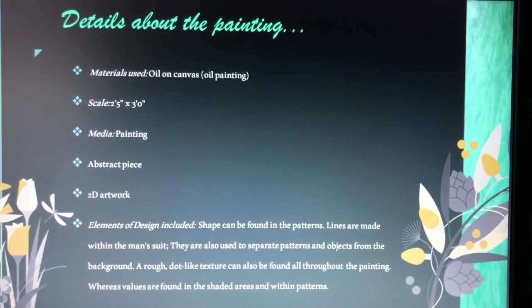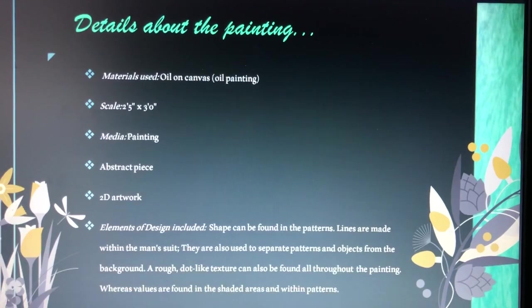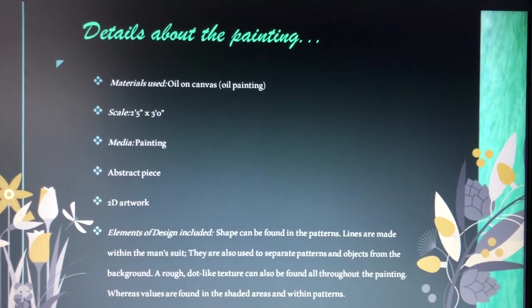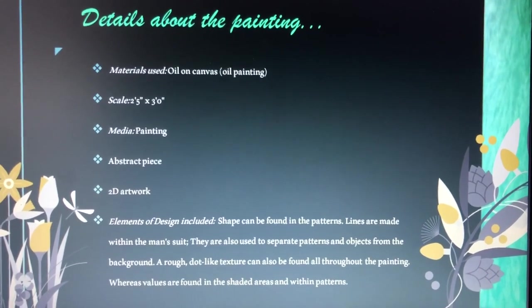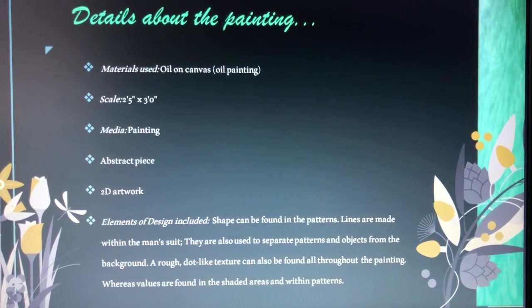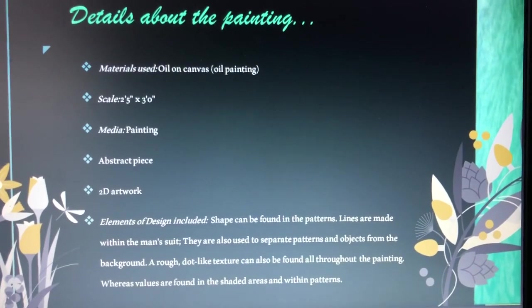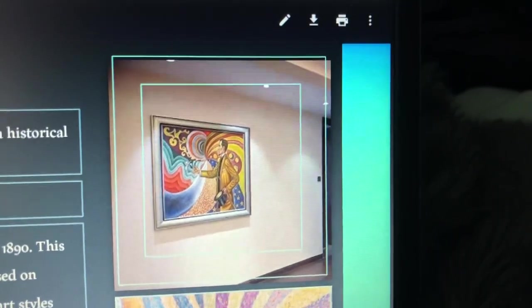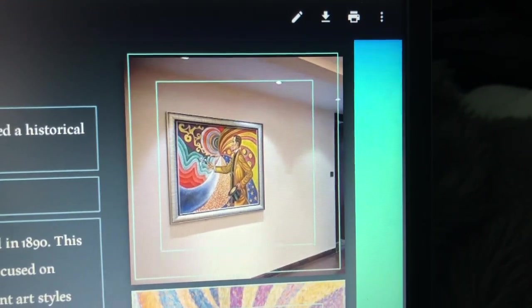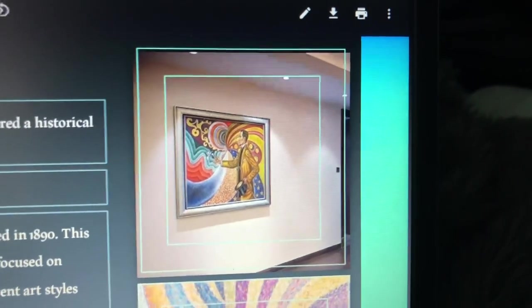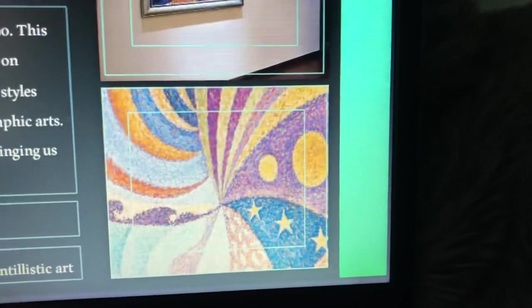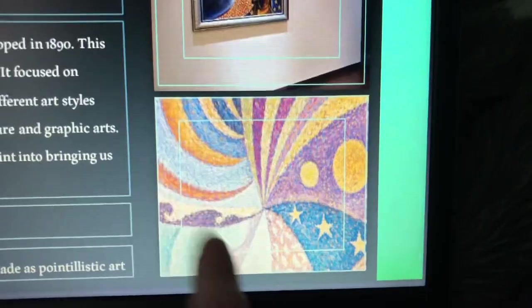The rough, dot-like texture can also be found throughout the whole entire painting, and values are going to be found in shaded areas and within patterns. The values and shading also help separate the background from objects and other things going on within the painting. Here's another picture I added so you can see the real scaling of the painting, and this is a more zoomed-in image of the background so you can really look at the texture I was talking about — where it looks rough and dot-like.